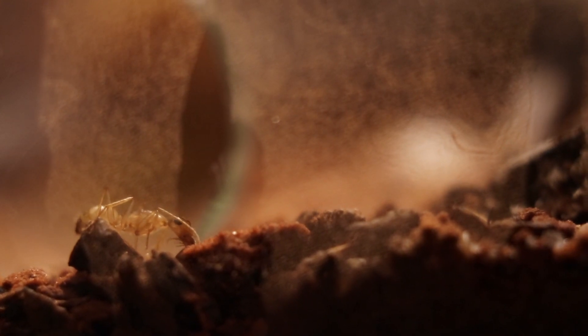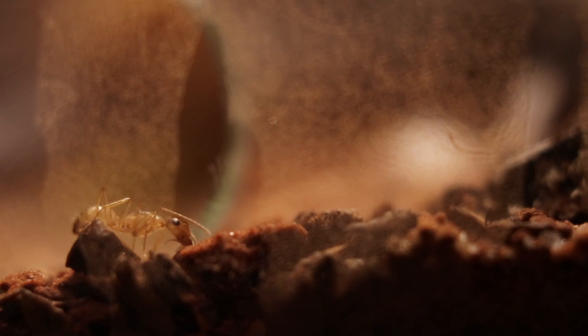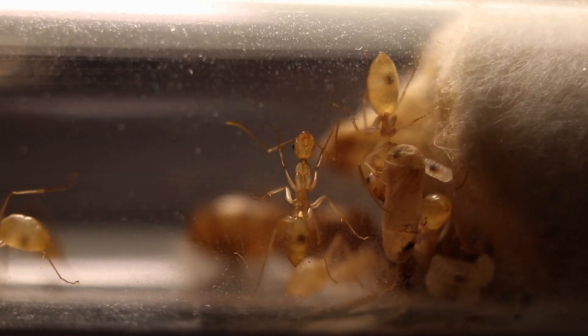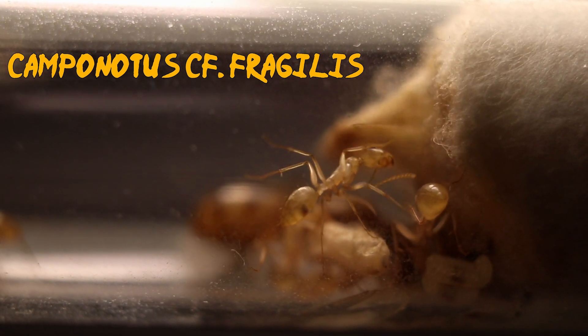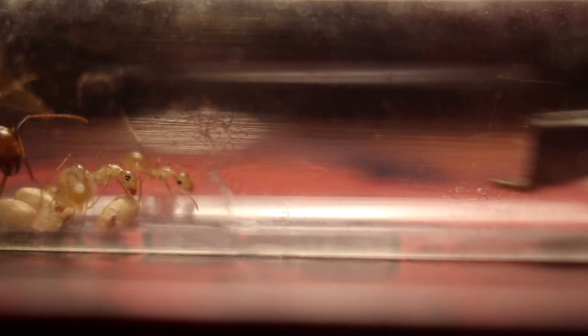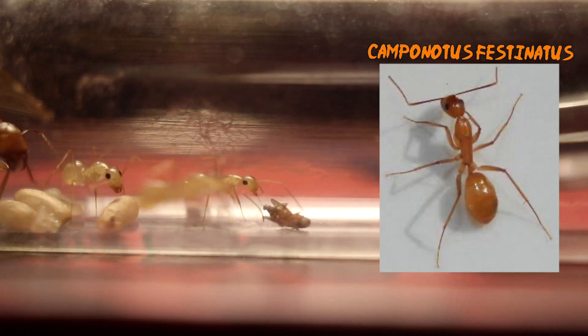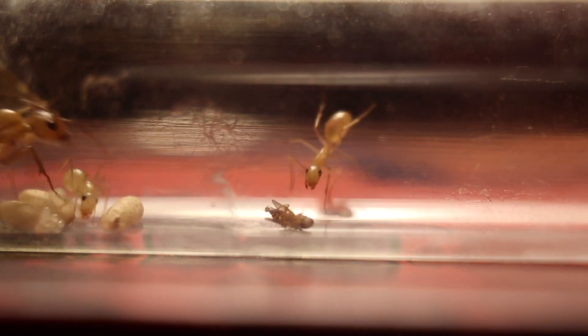Anyways, this Camponotus colony is definitely one of my favorites, so I hope you guys enjoyed seeing this colony. Now we'll go ahead and take a look at my Camponotus C. Fragilis colony. Many of you guys have said that this species looks like Fragilis, and it looks more like it than Festinatus. The workers are much more yellow than Festinatus too, so I'll be going with C. Fragilis from now on.